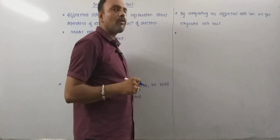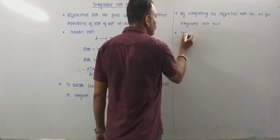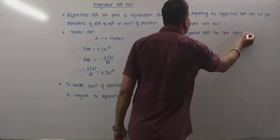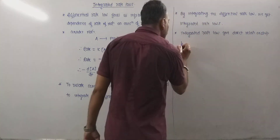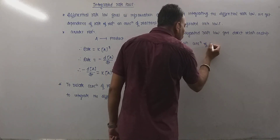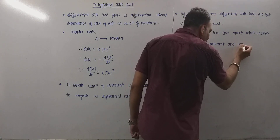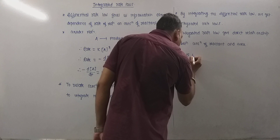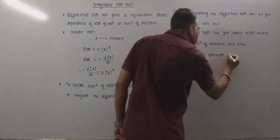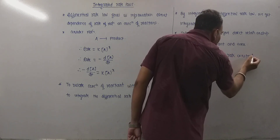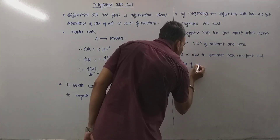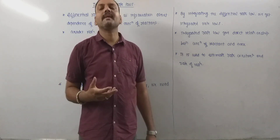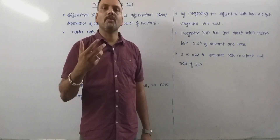Integrated rate laws give a direct relationship between concentration of reactant and time. It is used to estimate rate constant and rate of reaction. Integrated rate laws are very crucial and important to estimate or calculate the rate constant and rate of reaction, and they give a direct relationship between the concentration of reactant and time.